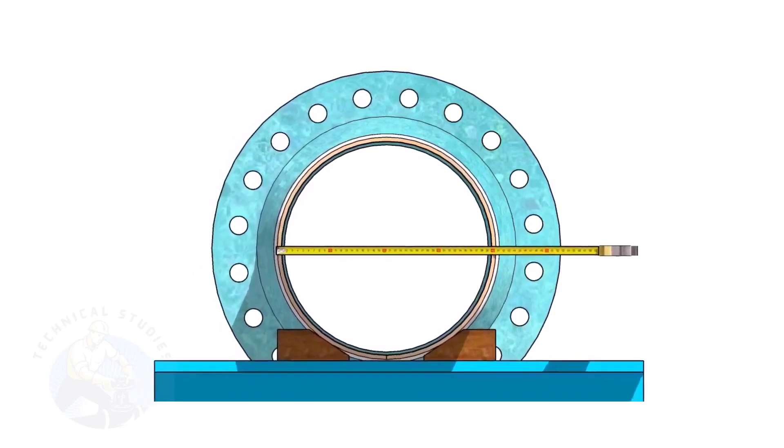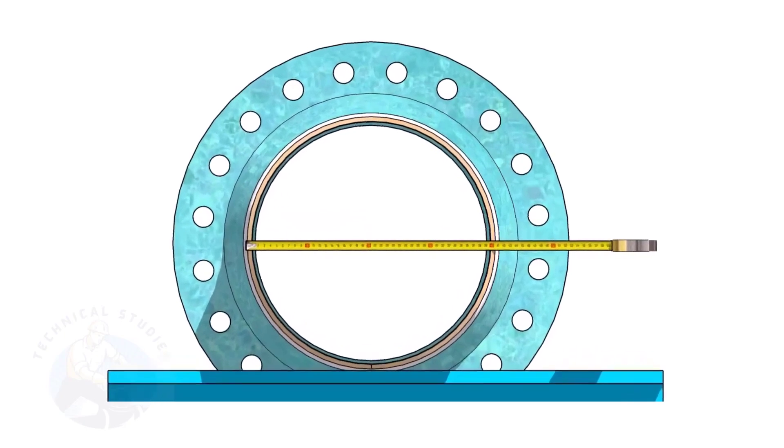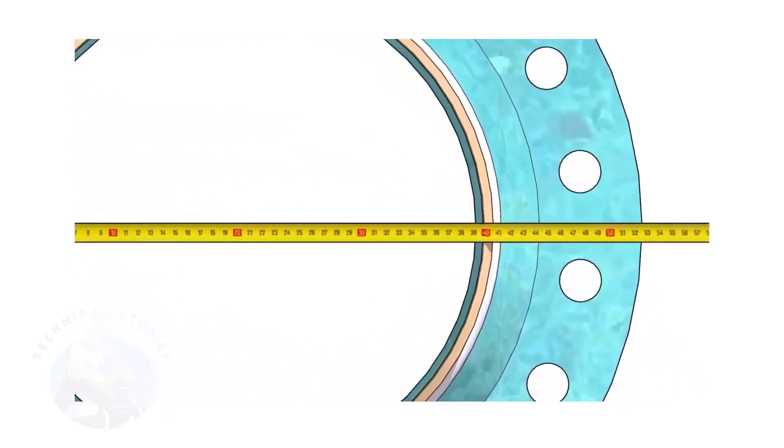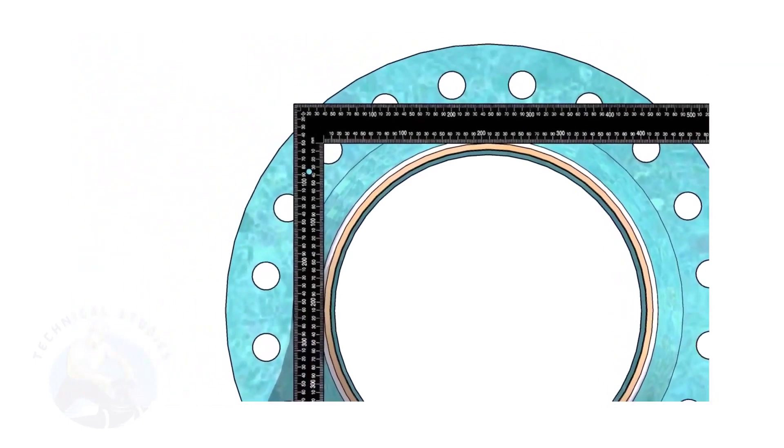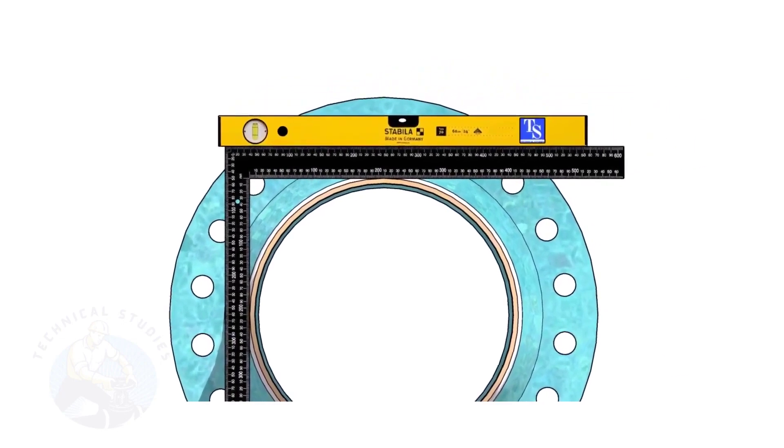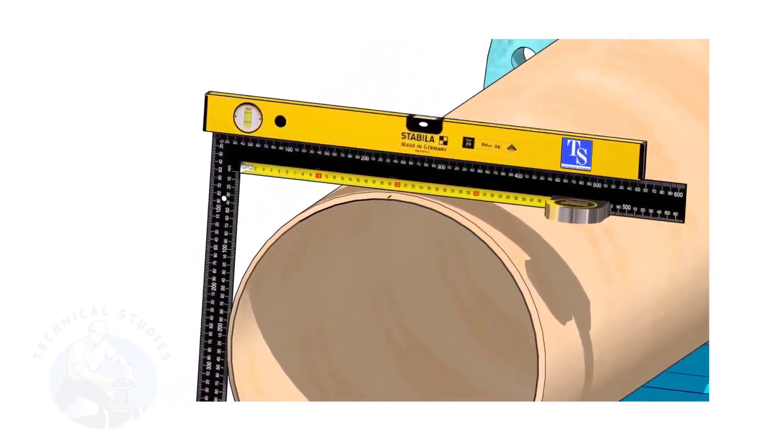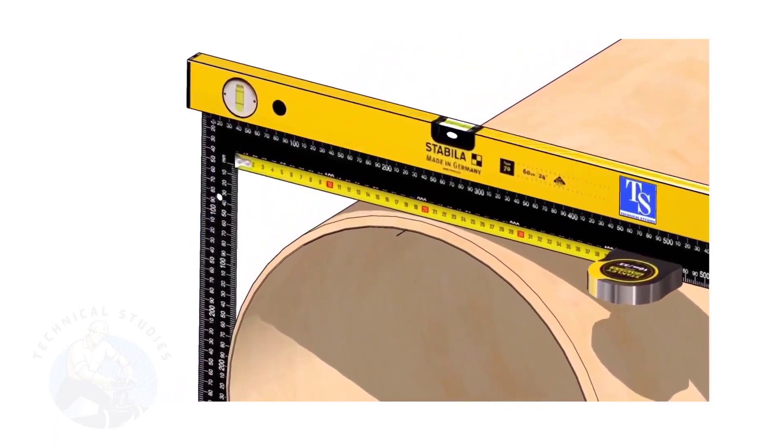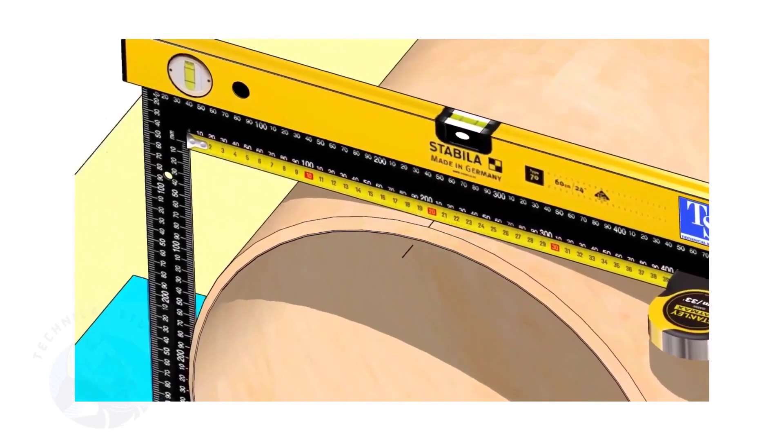Check the outer diameter of the pipe. Here, the diameter of the pipe is 406 millimeters. Hold a large right angle on the pipe as shown. Put a spirit level on the right angle and correct the top level. Mark half OD of the pipe on the top side. Here, the half OD is 203 millimeters.